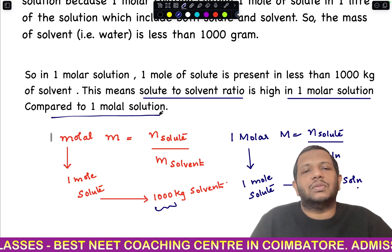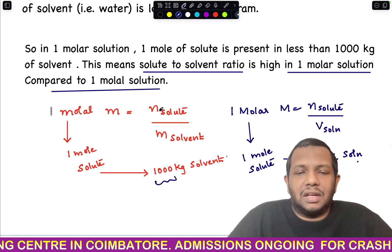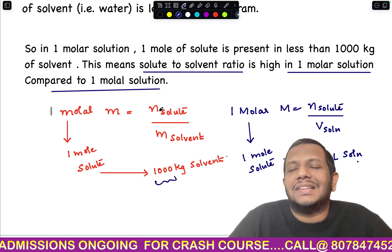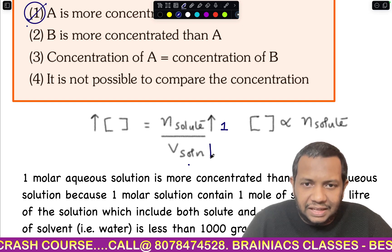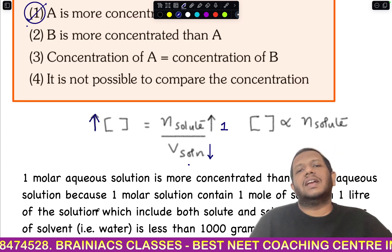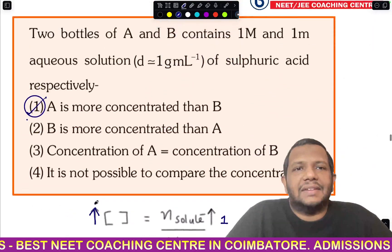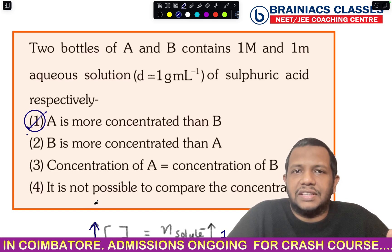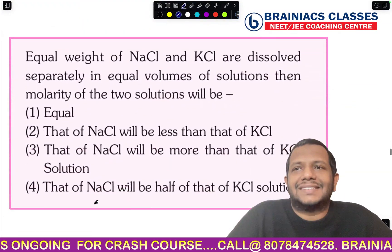Simply put: the solute-to-solvent ratio is higher in a 1 molar solution than in a 1 molal solution. In the 1 molal solution the solvent mass is high; in the 1 molar solution the solvent mass is less. Smaller denominator means higher concentration. So A (1 molar) is more concentrated than B (1 molal).